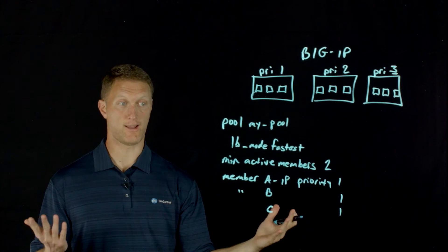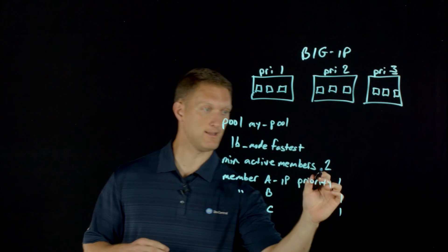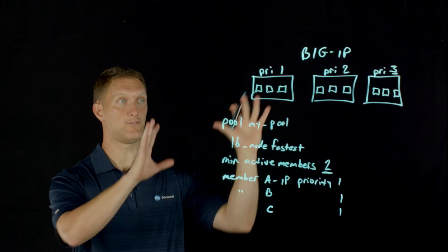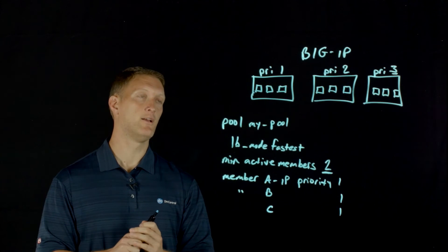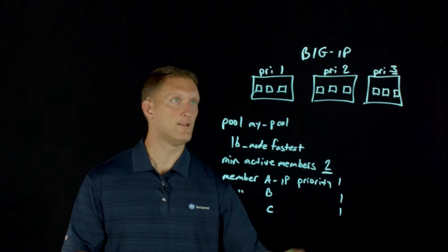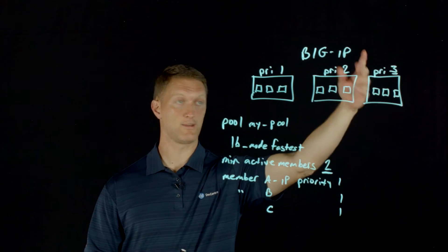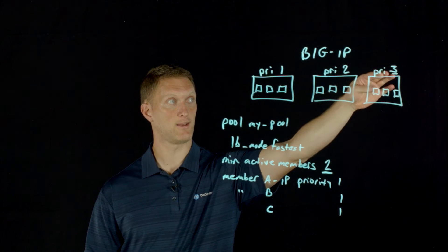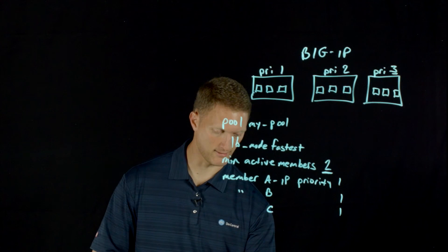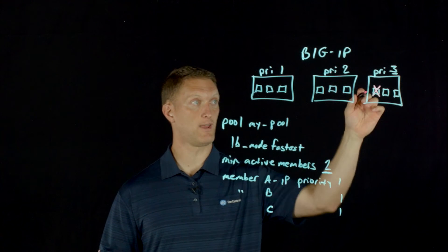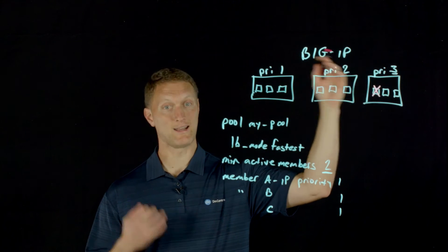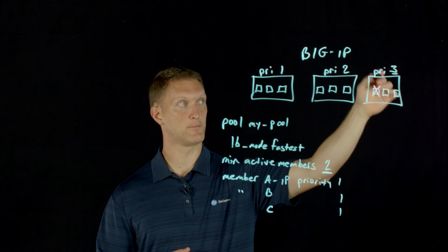Keep in mind that minimum active members of two is going to drive how traffic is load balanced. If every single pool member is up, all traffic load balances to the priority three group because that is the highest priority. Now let's say one of the priority three pool members goes down. Because the minimum active members is two, this priority group still gets all the traffic, load balanced to the remaining two pool members.